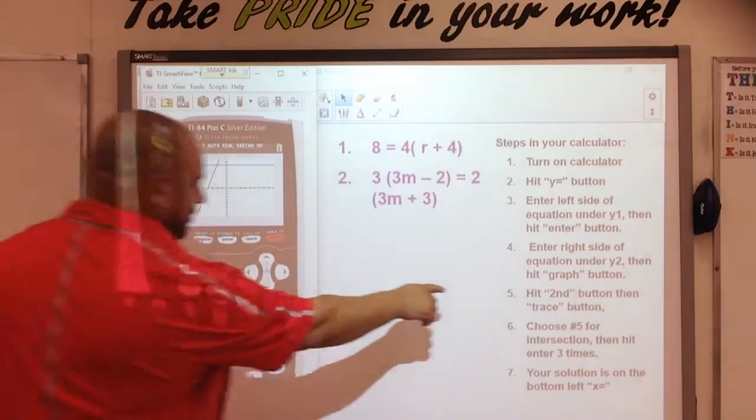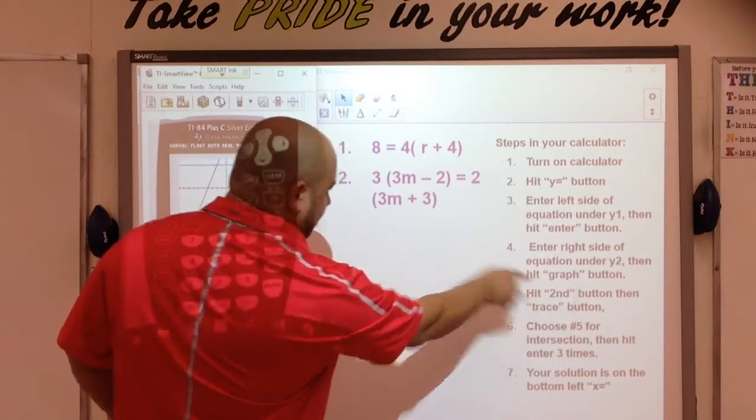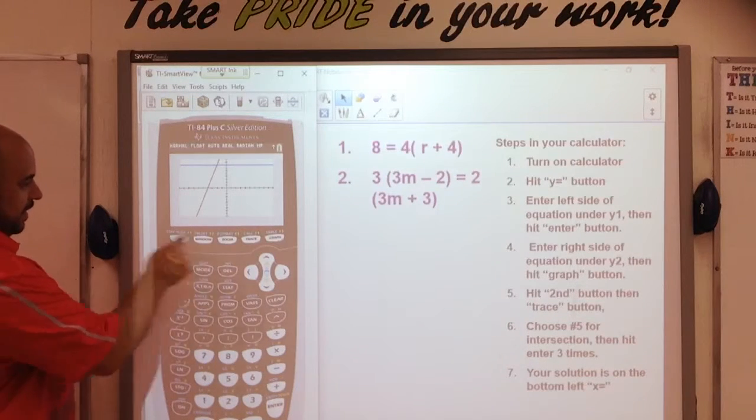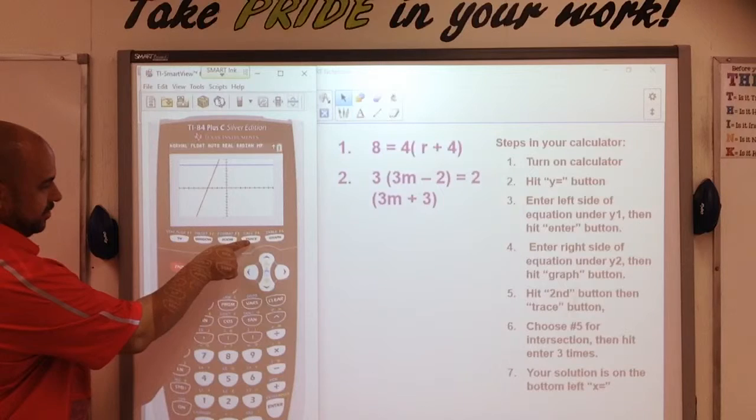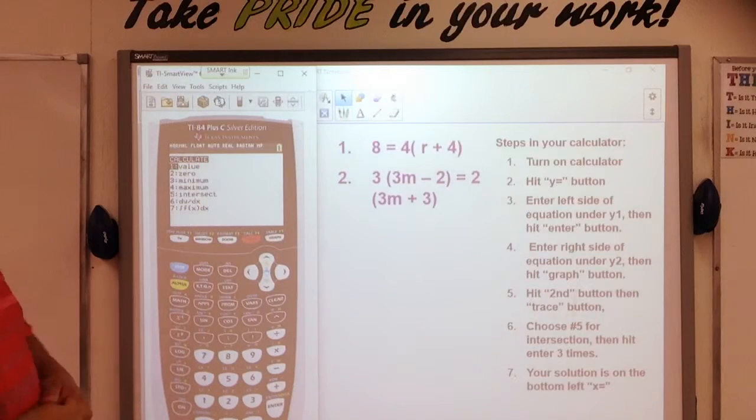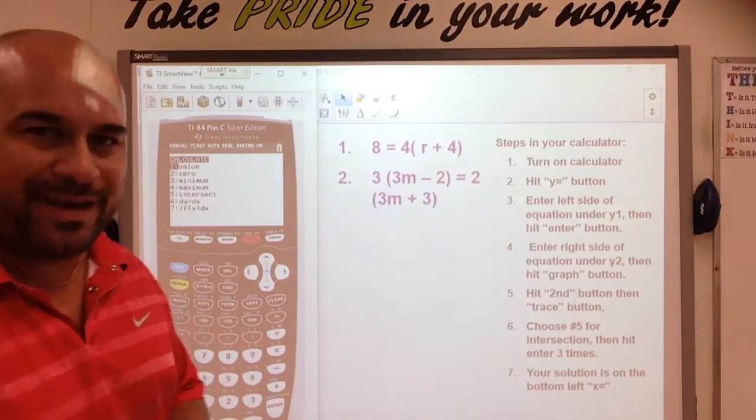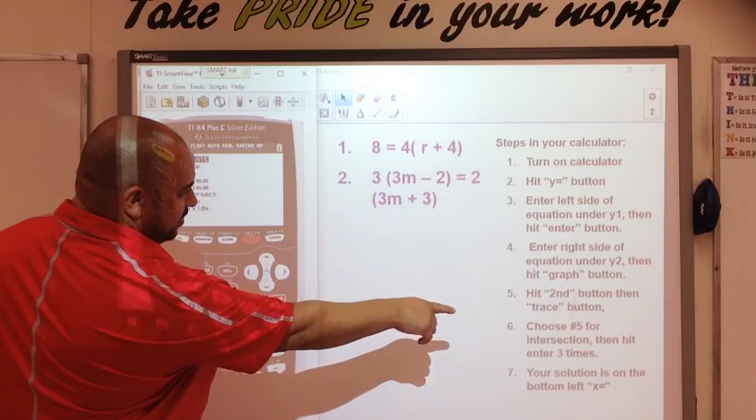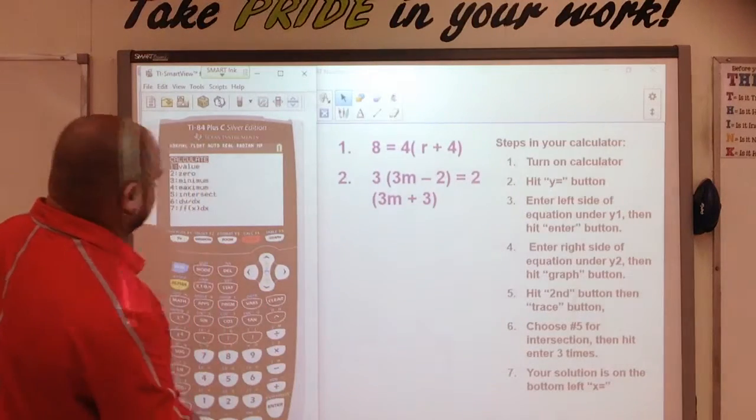Now, step number five. Hit second button, then trace button. So, the second button is right here. And then the trace button is right here. And what we're doing is we're in the calculate menu. And we're going to calculate the point of intersection, which is option number five. So, it says choose number five for intersection, then hit enter three times.